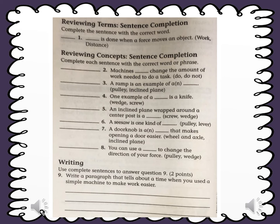Number 4. One example is a knife. Which simple machine is like knife? Wedge or screw? Wedge. Because wedge is used to split or cut things into pieces.